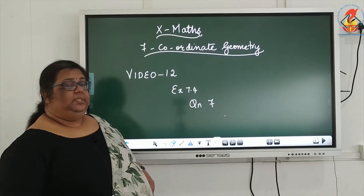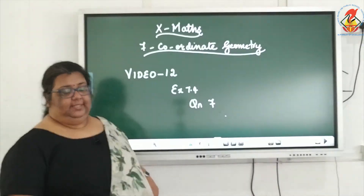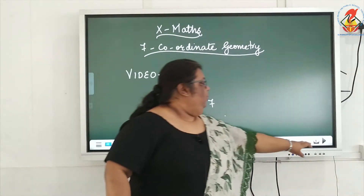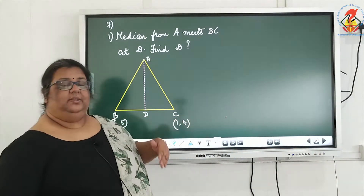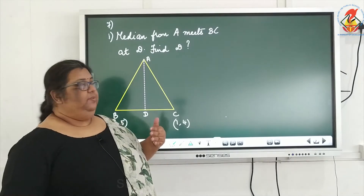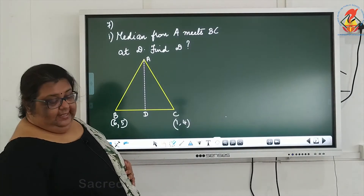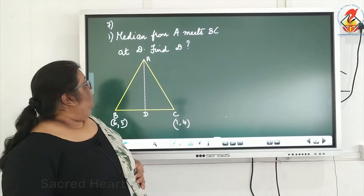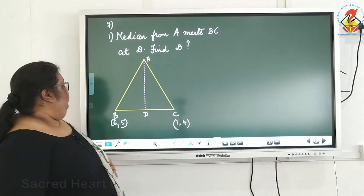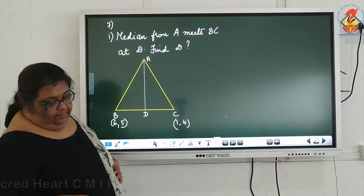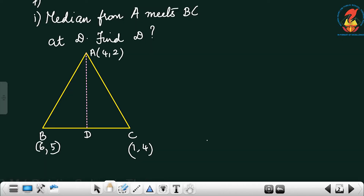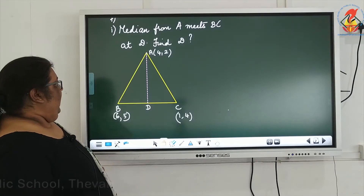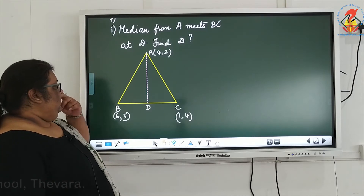Question number 7 of exercise 7.4. There are many subdivisions in this question. We will start with the first one. There is a triangle given. The vertex A is the ordered pair (4, 2), and B and C are given. The median from A meets BC at D.